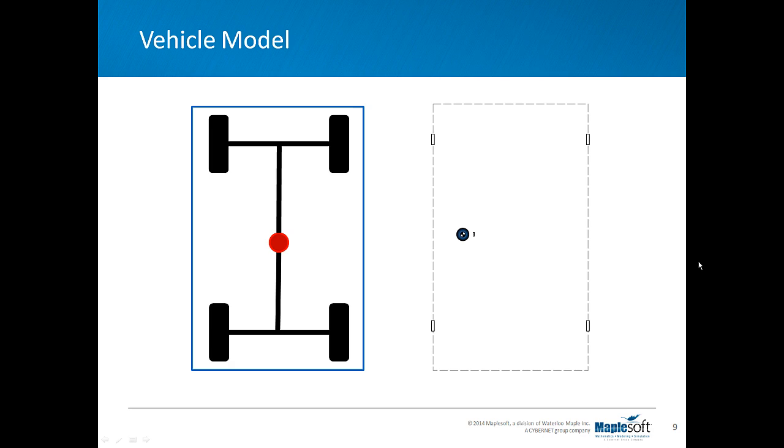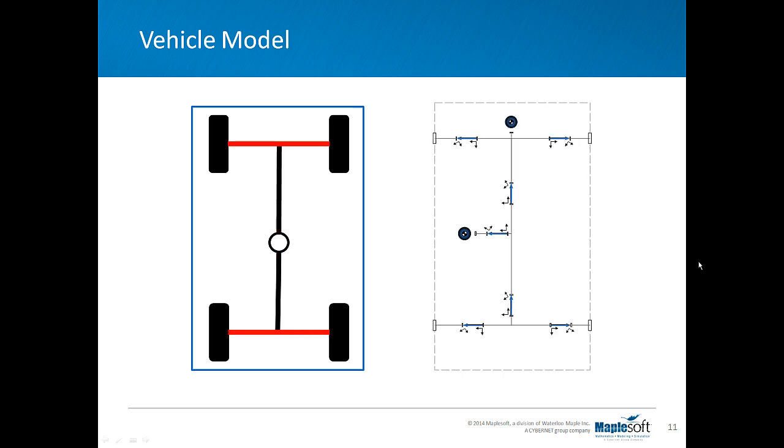On the right side of your screen you can see the MapleSim 2D environment. A rigid body was dragged into the environment to represent vehicle CG mass, and three rigid body frames to represent the vertical and longitudinal translations from center of gravity points to the front and rear axles, and four extra rigid body frames to account for the lateral translation from mid points to the left and right wheels.